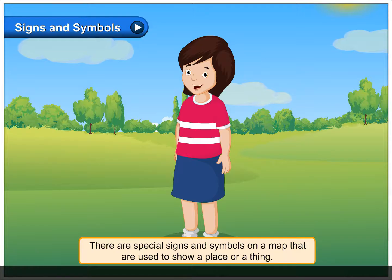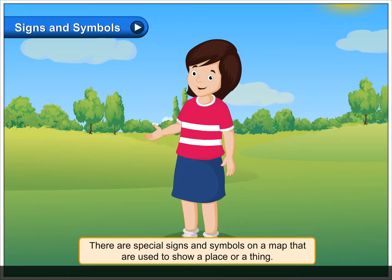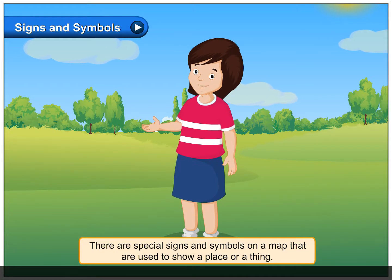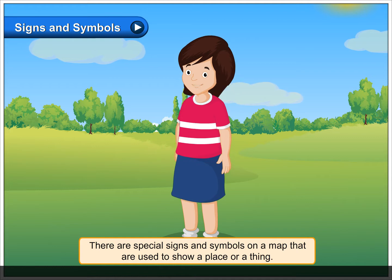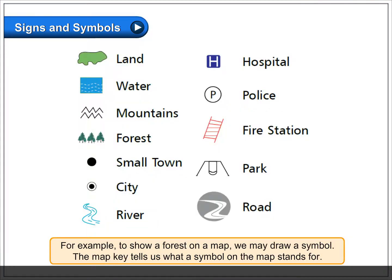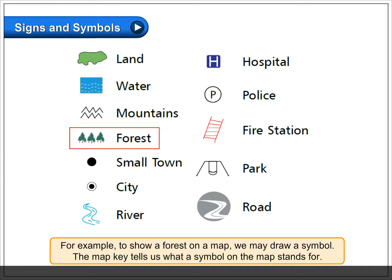Signs and symbols: there are special signs and symbols on a map that are used to show a place or a thing. For example, to show a forest on a map we may draw a symbol. The map key tells us what a symbol on the map stands for.